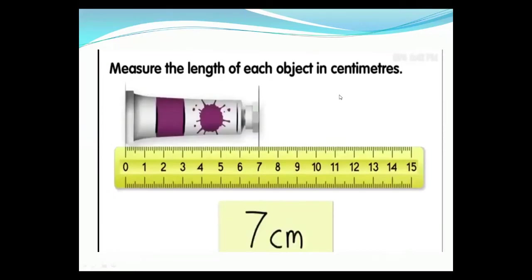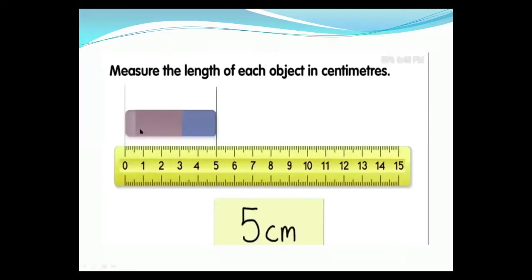Measure the length of each object in centimeters. The second object is a paint color brush. Find out what is the length of this paint brush. This paint color goes from zero to seven centimeters, so the length of this paint brush is equal to seven centimeters. Now, which object is this? This is the eraser — it is a smaller object. As you know, we measure smaller objects in centimeters. The length of this eraser is five centimeters. So we write here: five centimeters.